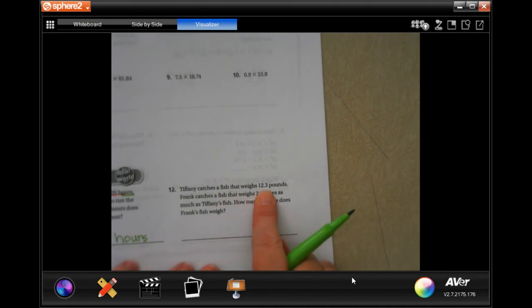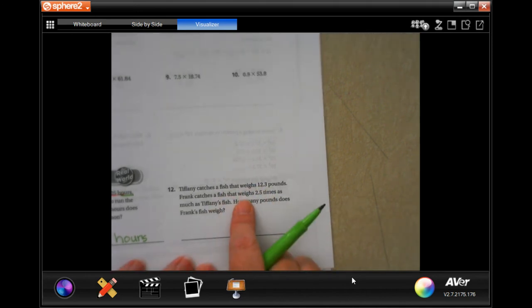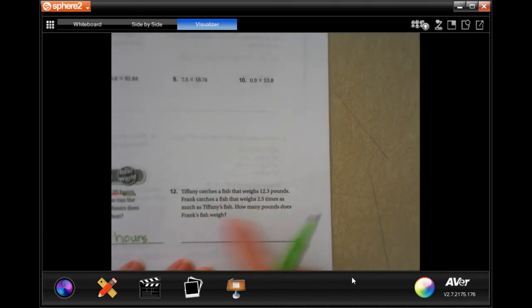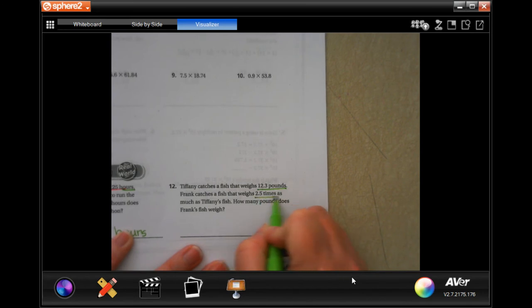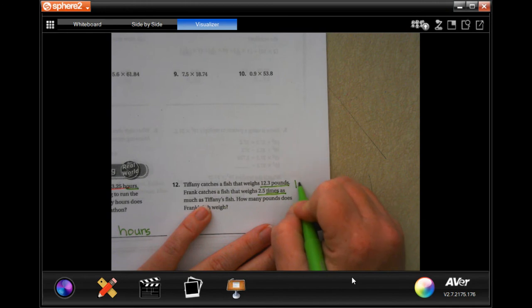Number twelve: Tiffany catches a fish that weighs 12.3 pounds. Frank catches a fish that weighs 2.5 times as much. How much does Frank's fish weigh? It's telling us again what to do.